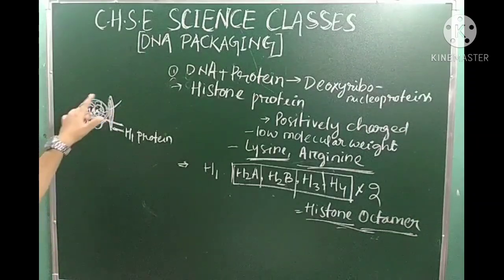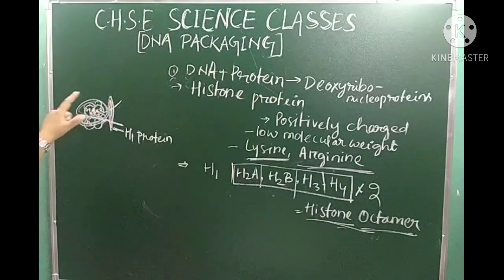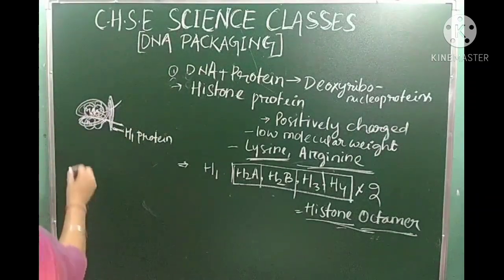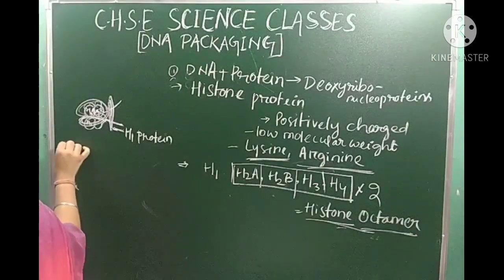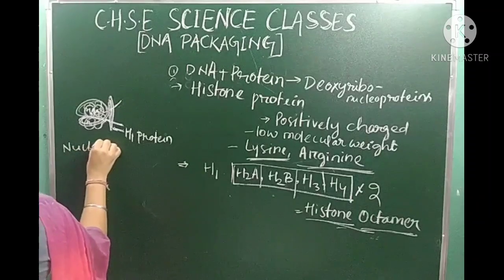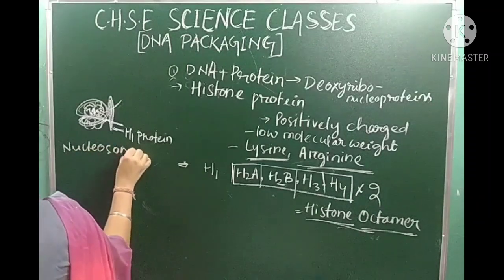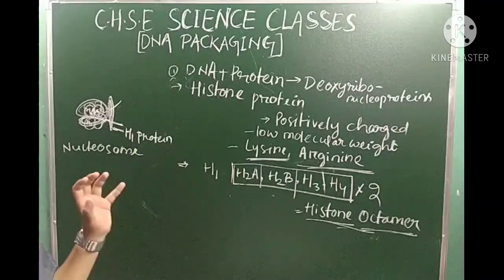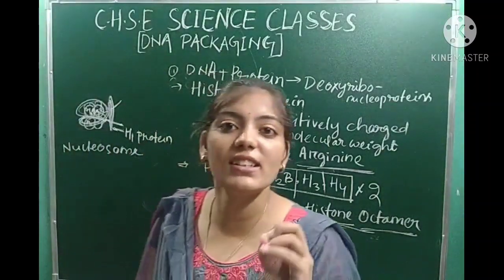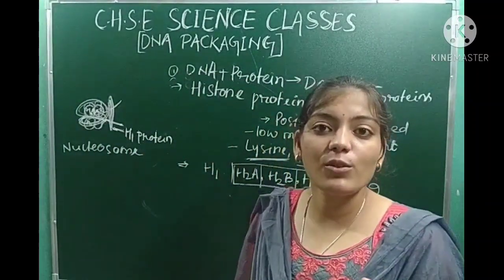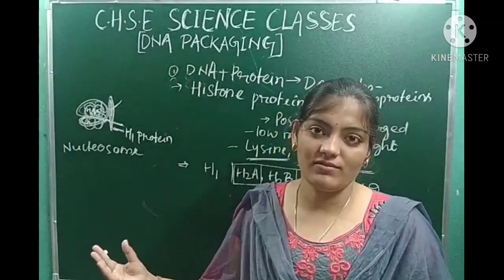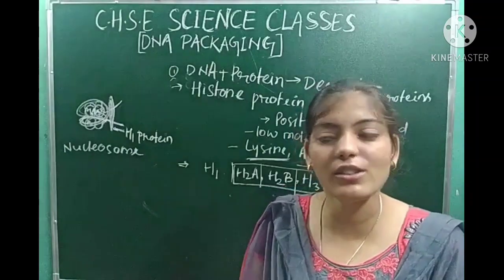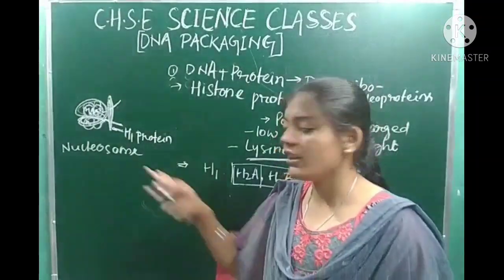The nucleosome is the basic unit of chromosome. Nucleosome is the basic unit of the chromatin fiber. Each nucleosome consists of the histone octamer around which the DNA is packaged.